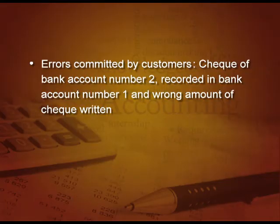Errors can also be committed by the customers — like a cheque of bank account number two recorded in bank account number one. Suppose I have two bank accounts in the same bank and I deposit account number two's cheque in account number one in my cash book, but when it goes to the bank it will go into the correct account. Also, sometimes a wrong amount of cheque can be written in the cash book, but in the pass book it will be the correct amount. All these errors will result in differences between cash book and pass book, which have to be reconciled by the customer or the firm.